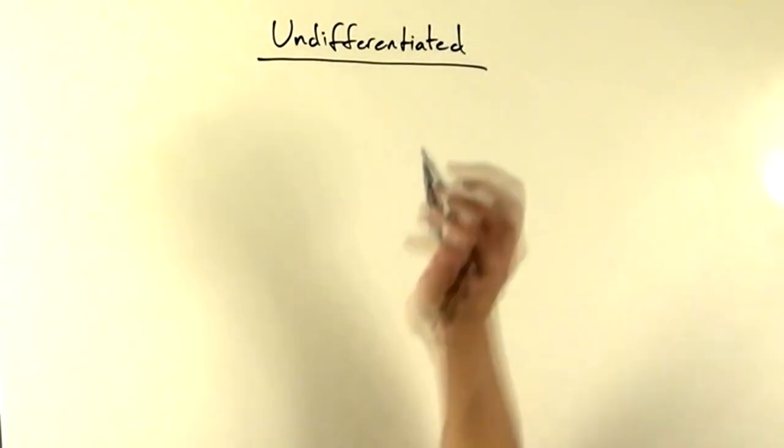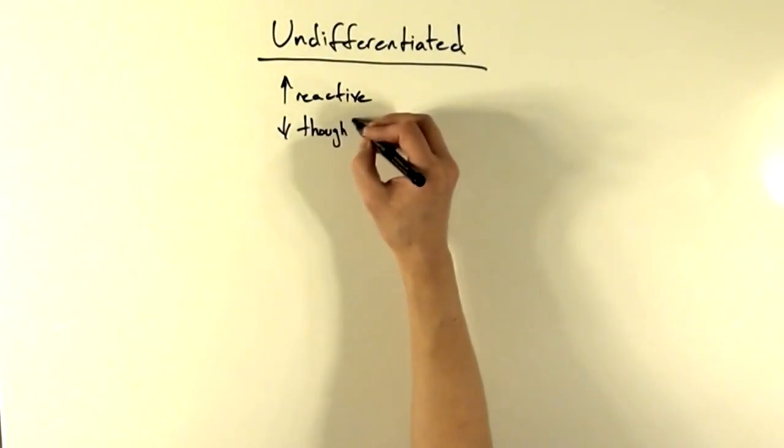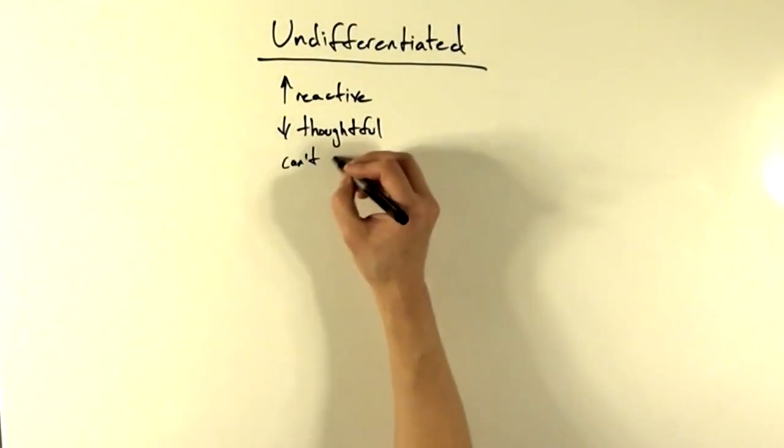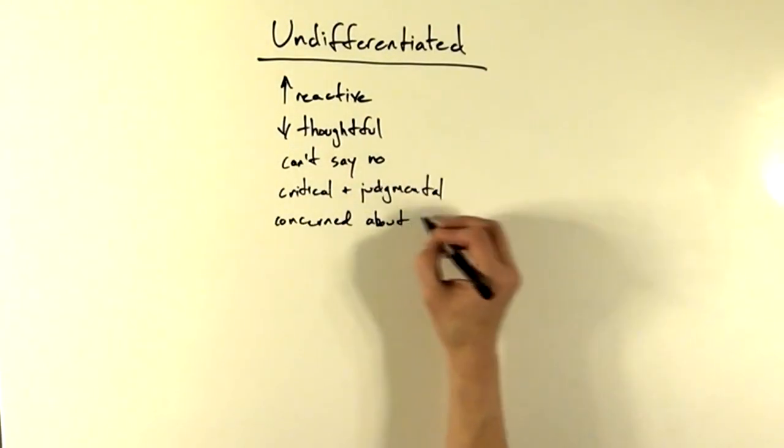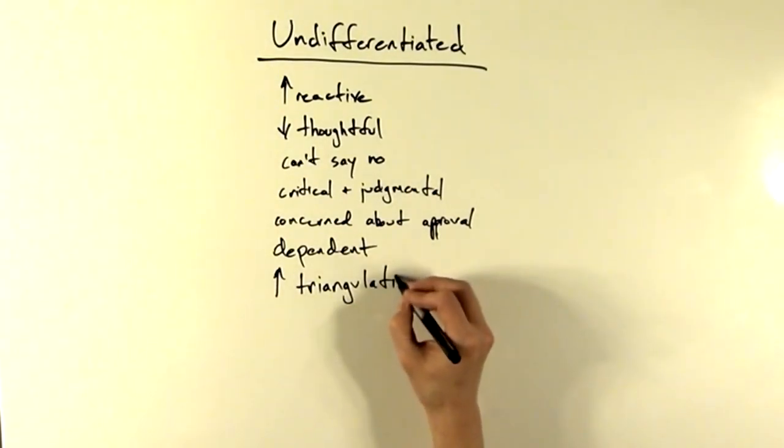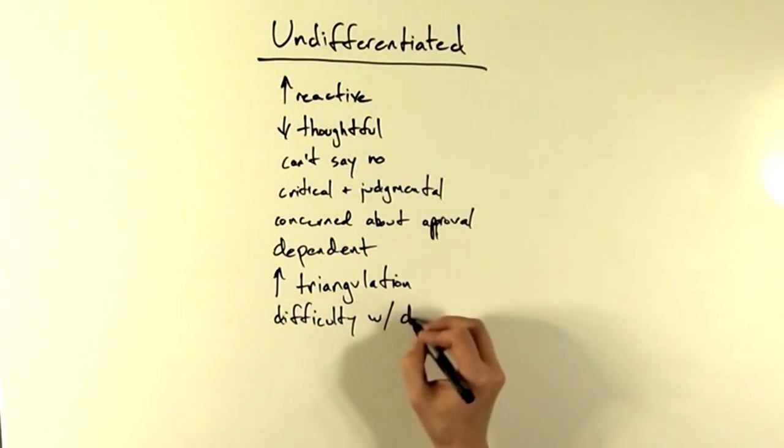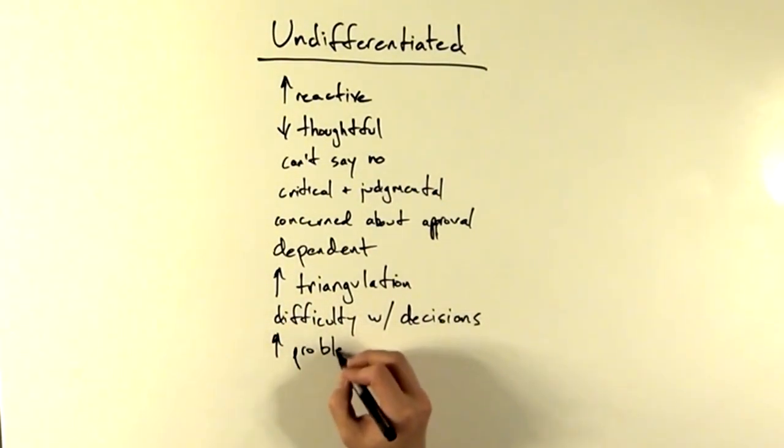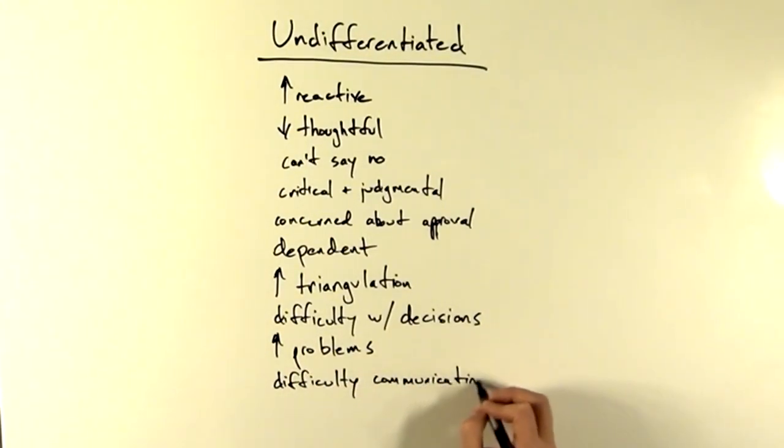People at lower levels of differentiation are more emotionally reactive, have difficulty engaging in thoughtful behavior, have difficulty saying no to people, are more critical and judgmental, are overly concerned about approval, are more dependent on others, are more prone to triangulation, enmeshment, disengagement, conflict, and cutoff, have difficulty making decisions, have greater physical problems, emotional problems, and social problems, have difficulty communicating directly, and repeat problematic relationships rather than learning from their mistakes.